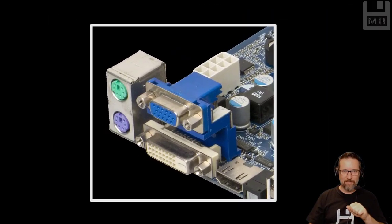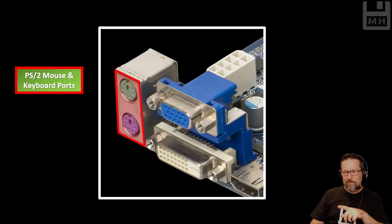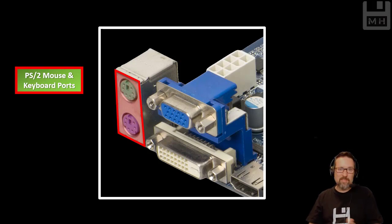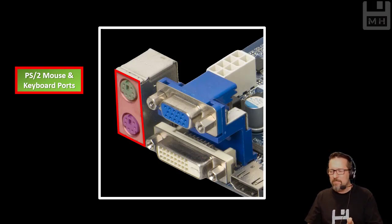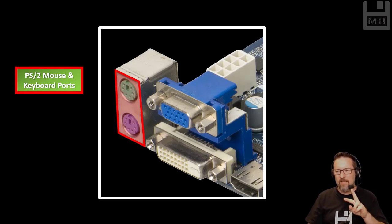Let's start over here. So here you can see we have a couple of ports. We've got this one over here — that is called the PS2 mouse and keyboard ports. I don't know why it's called PS2. You don't find them a lot because we use USB for pretty much everything nowadays, but you still get computers with those ports. One was the mouse, one was the keyboard — they were color-coded.